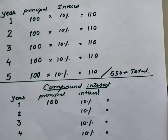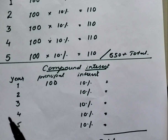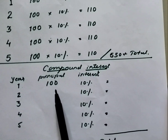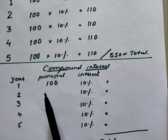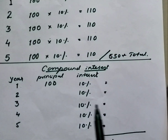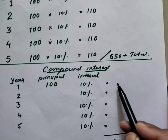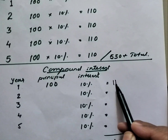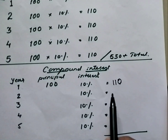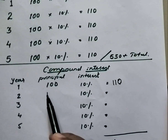Now I will explain compound interest. The same person, if he or she has invested 100 rupees in an FD in the bank for five years at 10 percent interest rate — for the first year, he or she will get 110 rupees. Now for the second year, for compound interest, these 110 rupees become the principal.